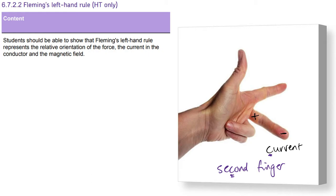Your second finger is current. And that goes from positive to negative. And finally, we have the thumb, motion. And that tells you the direction of the force that gets induced. And that goes from the bottom of your thumb to the tip.